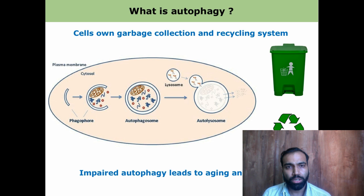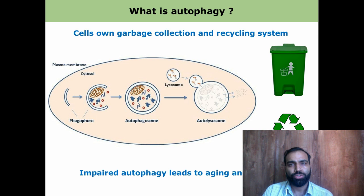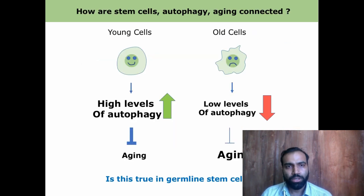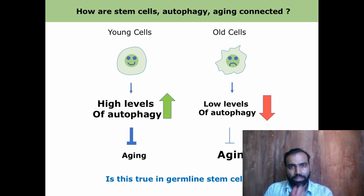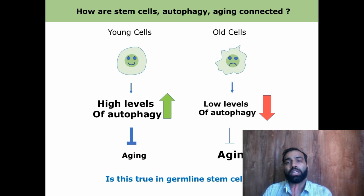Impaired autophagy has been shown to cause accelerated aging and lead to diseases such as neurodegeneration and cancer. So what is the connection between stem cells, autophagy, and aging? Researchers have shown that in younger cells autophagy is maintained at higher levels and therefore the process of aging is slower. However, as these cells age, the levels of autophagy go down and this causes aging. Is this true for germline stem cells? Yes — we have found that as these germline stem cells age, the autophagy levels are going down.